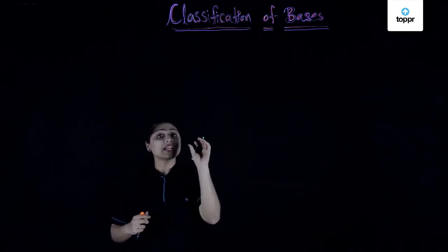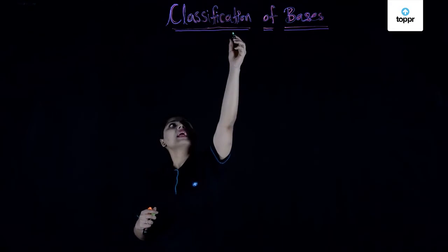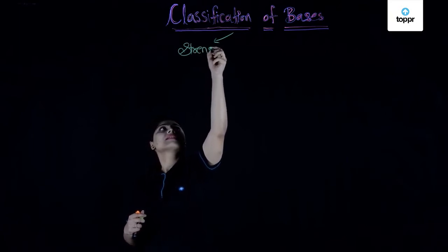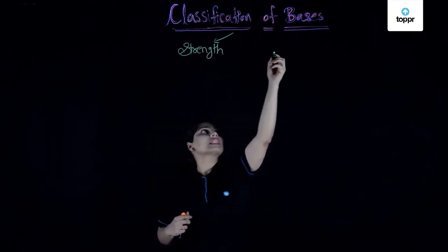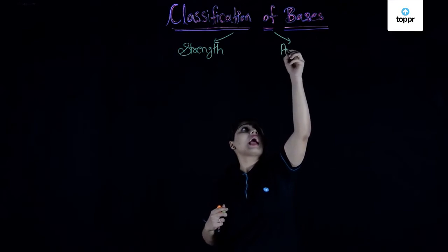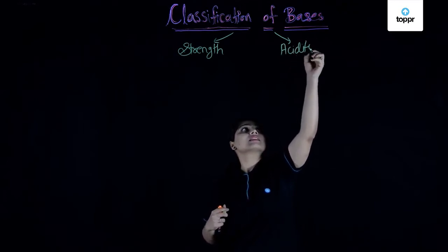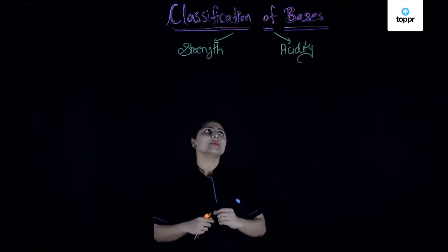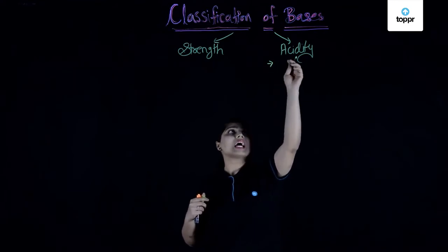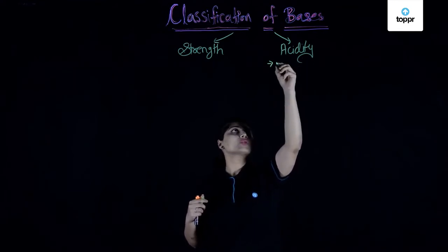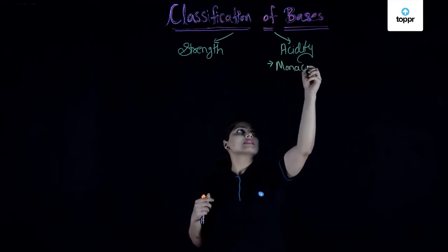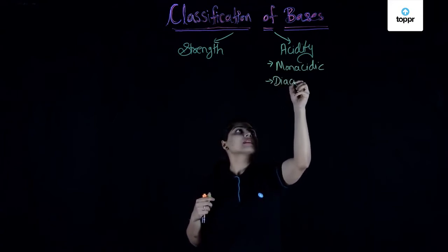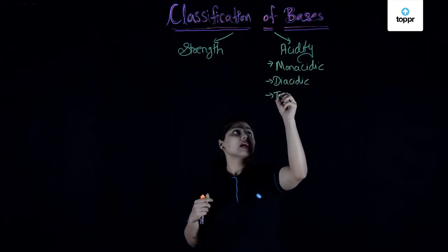Depending upon the hydroxyl ions, we can divide bases on the basis of their strength, and we can also classify them on the basis of their acidity. According to acidity, we divide bases into monoacidic, diacidic, and triacidic.